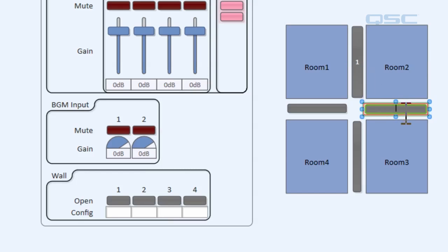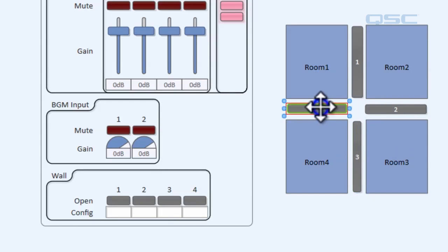That's going to be wall one, wall two, wall three, and wall four. This will really come in handy when we're configuring the actual module.